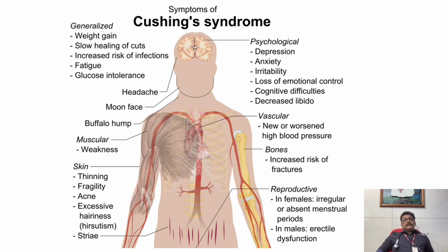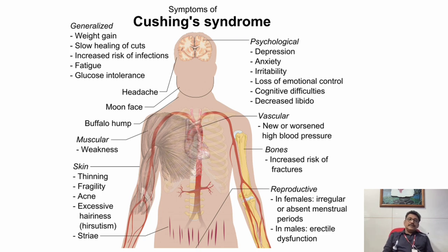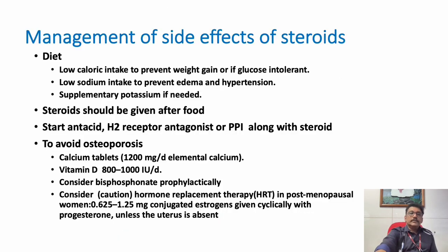One problem of steroid is Cushingoid features — not Cushing's syndrome as such, but cushingoid features. Patients on steroids can develop weight gain, buffalo hump, facial edema, moon face, and many other complications. Very early on, patients develop acne, facial puffiness, and water retention. Long-term steroid use can produce buffalo hump due to fat accumulation on the back.